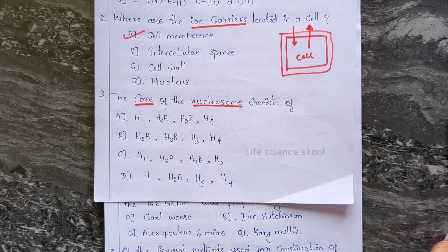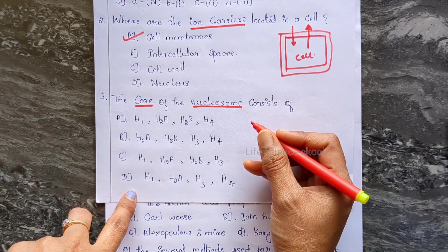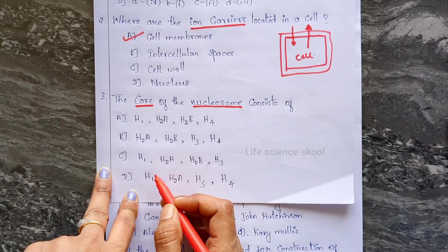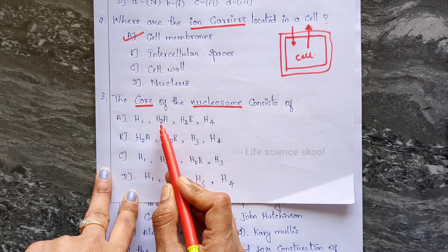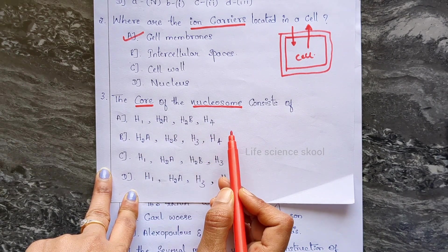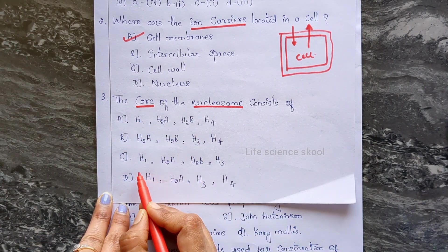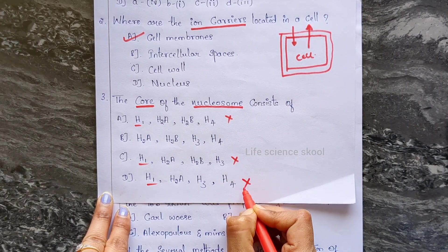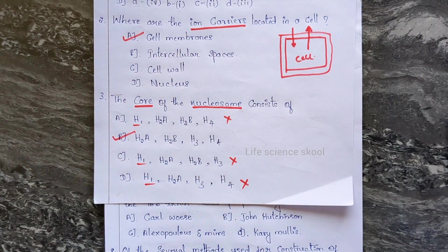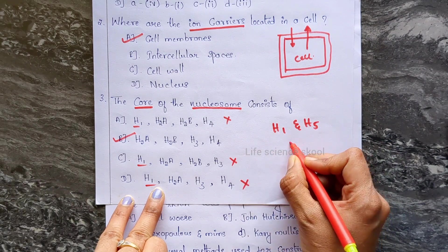So we need to solve this question about core histones. Looking at the options, one option has H1, H2A, H2B, H4 — but H1 is a linker histone, not a core histone. We need to eliminate that. The correct answer is option B, which contains H2A, H2B, H3, and H4 — the core histones. The linker histones are H1 and H5.